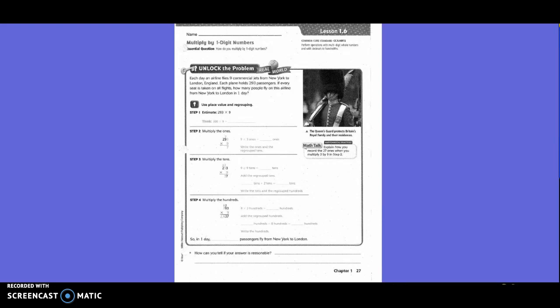So first of all, they want us to estimate. So they want us to take 293 times 9, and then they went ahead and estimated 293 to 300 times 9. So 3 times 9 is what? 27. And then we need to add two zeros. So our answer is 2,700 for our estimate.